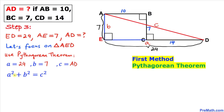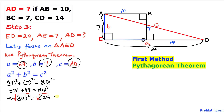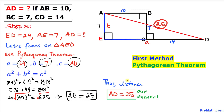Using the Pythagorean formula a² + b² = c², let's fill in the values. In our case a is 24, so we have 24² plus 7² equals AD². Simplifying: 24² is 576, plus 49, equals AD². So AD² equals 625. Taking the square root, AD equals 25.